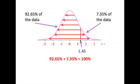And to help you envision that 100% of the data lie under the curve, observe that to the left of a z-score of 1.45, we have 92.65% of the data, and to the right of the z-score of 1.45, we have 7.35% of the data, and that adds up to 100% of the data under the curve.